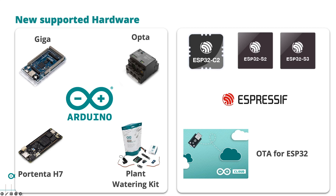Now let's jump into the most interesting part of the presentation and see what's new on the Arduino Cloud. The first thing I want to speak about is the new supported hardware. We have added support for a bunch of boards — some are Arduino hardware like the Opta, PortentH7, Giga, or the recent Plant Watering Kit. But we are not leaving behind ESP32 users, and we have included support for the C2, S2, and S3 platforms. Additionally, it is now possible to do OTA over-the-air updates for ESP platforms too — this was a feature only available for Arduino boards in the past.